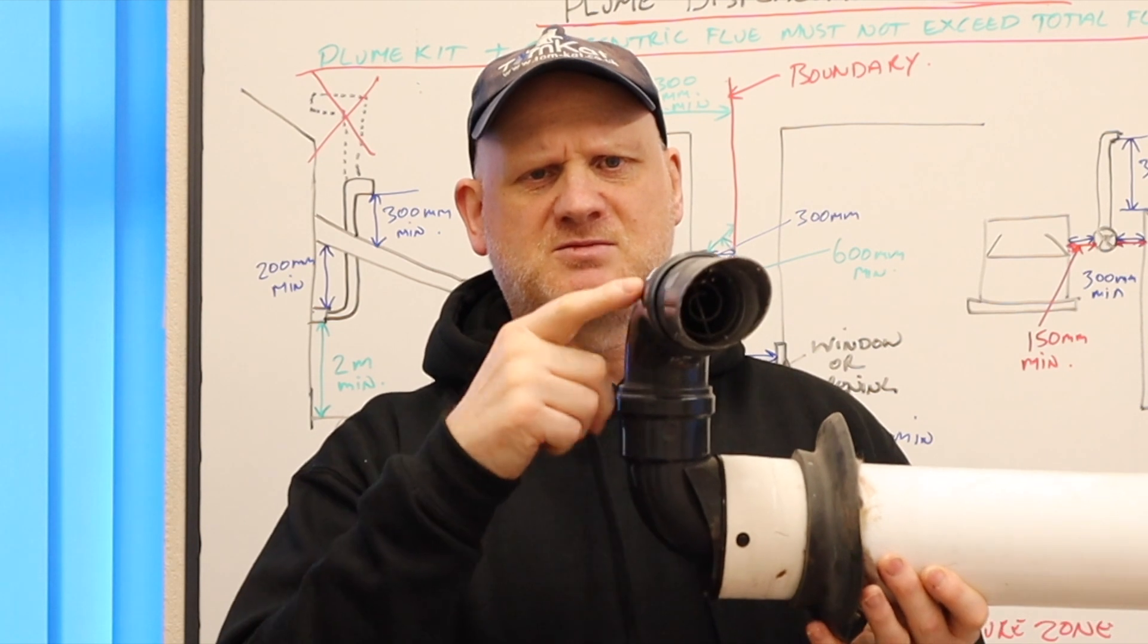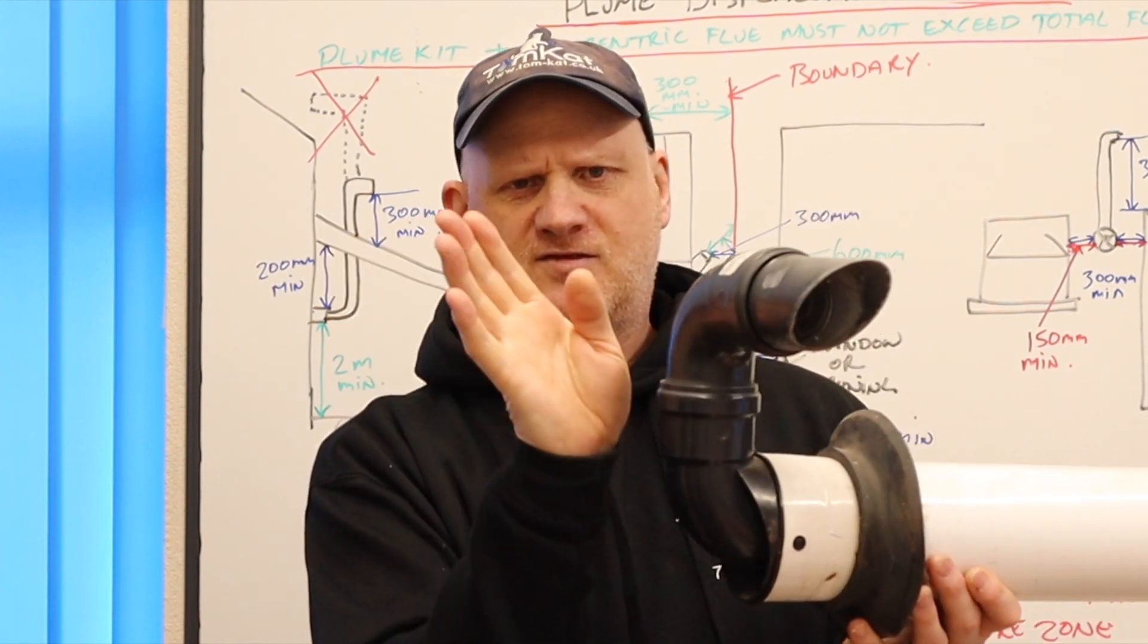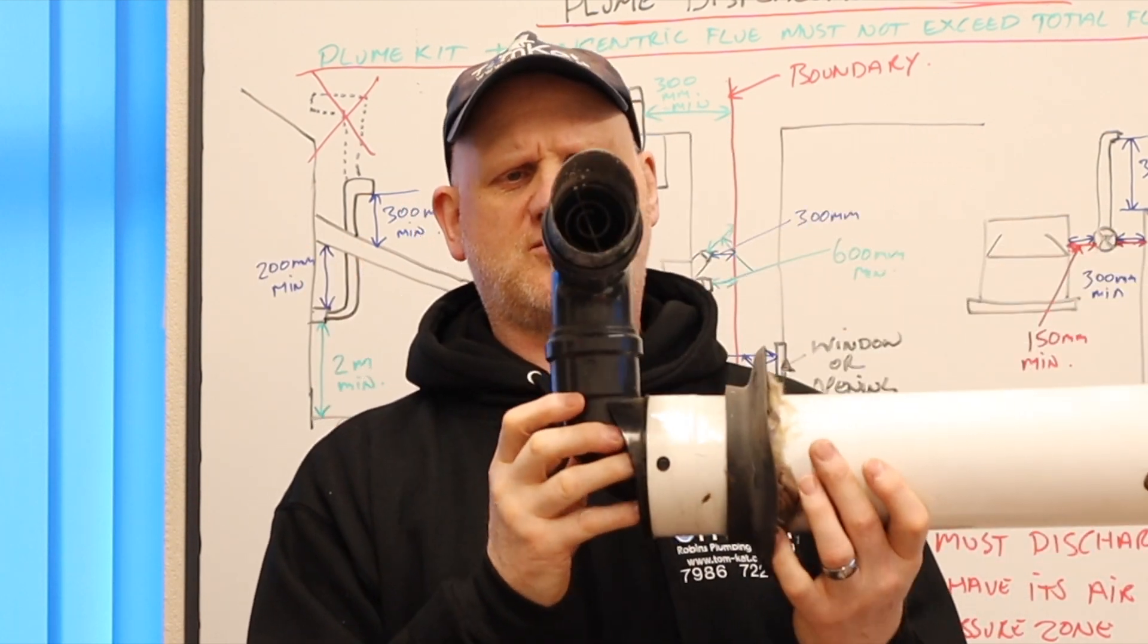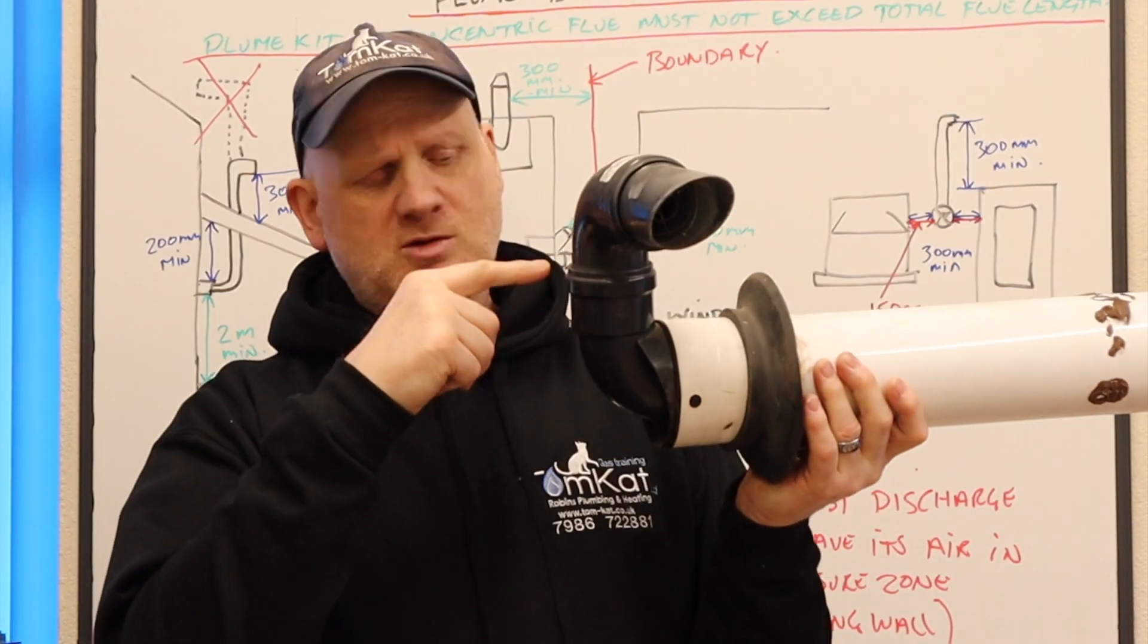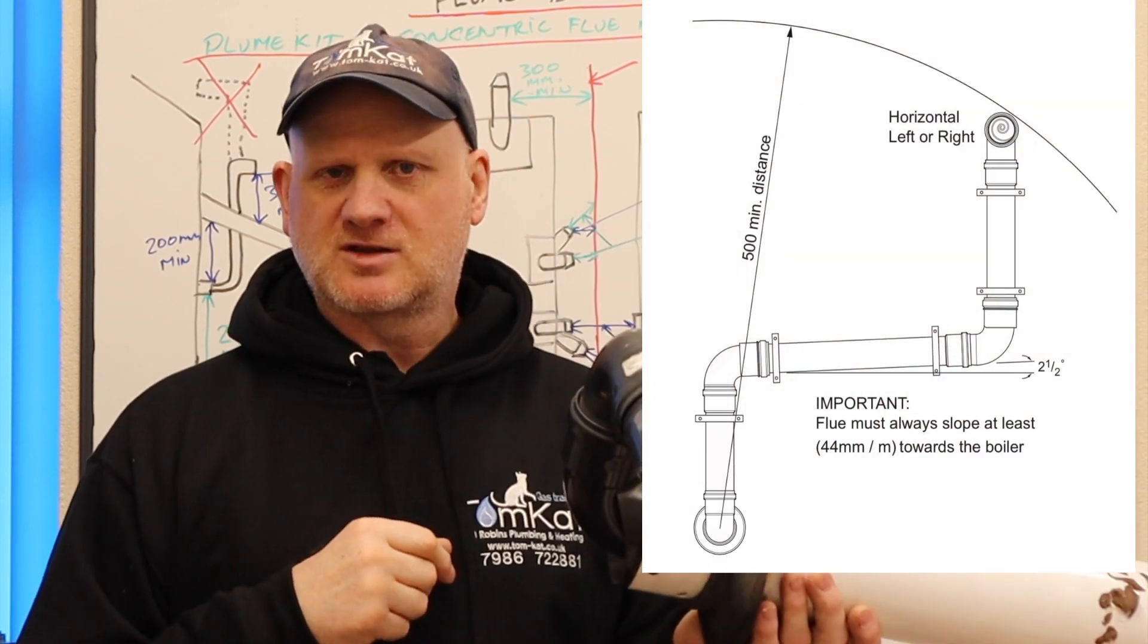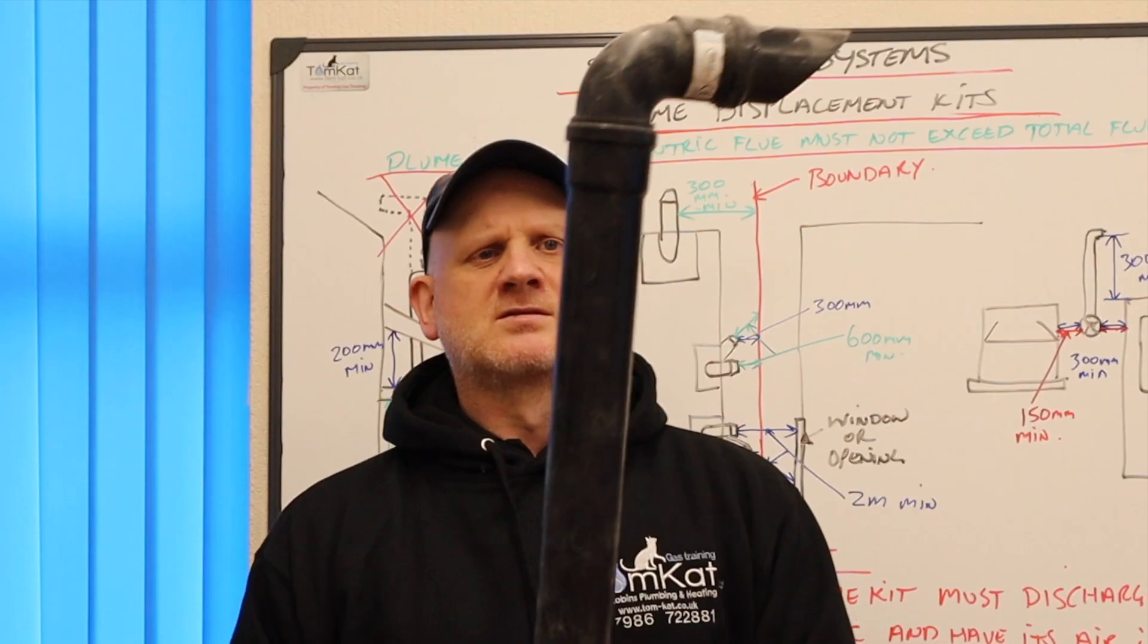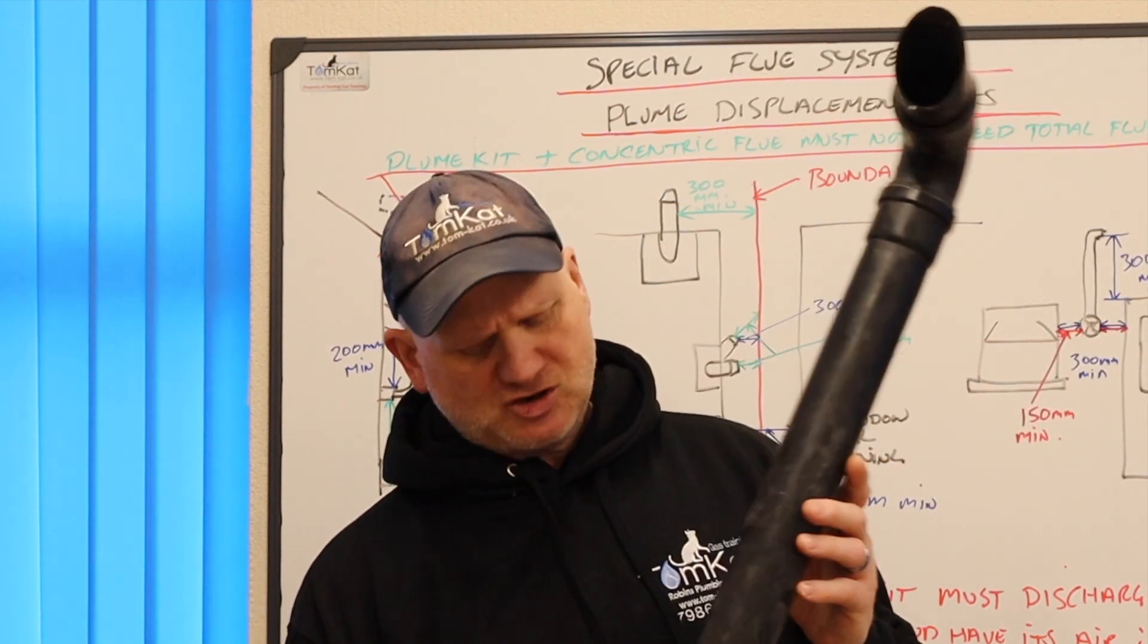The only problem is the maximum angle you can put for this is 45 degrees from 90. So that would be actually installed wrong, but it doesn't spin anymore. Also, we can't just come off the top like that because we have to have a minimum height in a flue system using a plume management kit of 500 millimetres. So we use these extension pieces.